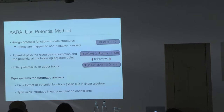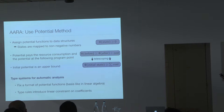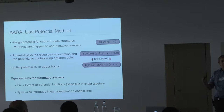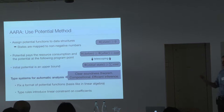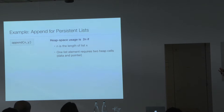To automate this, we find potential functions using a type system. We fix the format of the potential function — think of it like a basis in linear algebra. The type system produces local constraints on the coefficients of these basis vectors. This has a clear soundness theorem with respect to cost semantics, and through the types it's compositional and allows for efficient inference with LP solving.